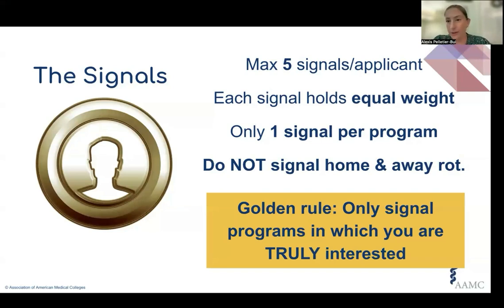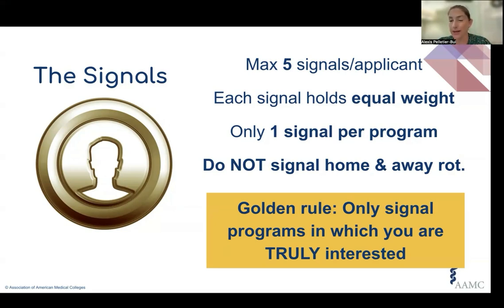Each signal holds equal weight, so we are not participating in the tiered gold/silver signaling — just one weight. You can only get one signal per program. The golden rule is to signal only programs from which you are truly interested. Only signal a place that you're actually interested in. You don't want to game the system to the point that it's at your disadvantage.